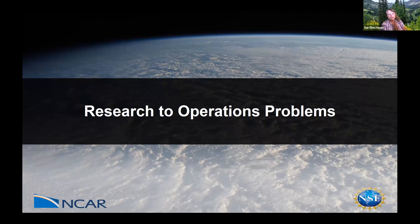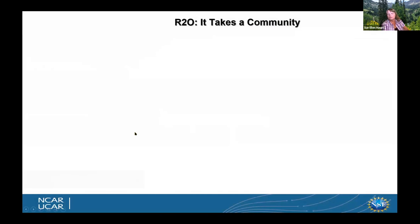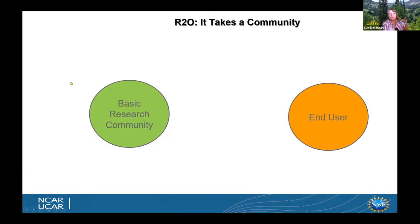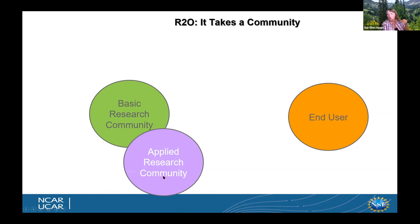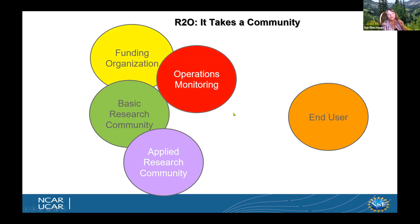Now let's move into real research-to-operations problems — what is provided to clients. What does it take to do these R2O problems? We start with an end user that has a need, while the basic research community has been doing research in weather, S2S, and climate prediction — they're far apart and not meeting user needs. There's applied research as a first step, and in most cases you need somebody willing to fund this process. You need data monitoring in the field, real-time computing and prediction capabilities, and importantly, translating the results and really connecting with the end user.